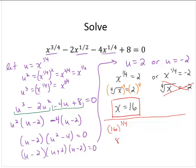Because the 4th root of 16 is 2, and 2 cubed is 8. Minus 2 times 16 to the 1/2. 16 to the 1/2 is 4. The square root of 16 is 4. So minus 2 times 4.